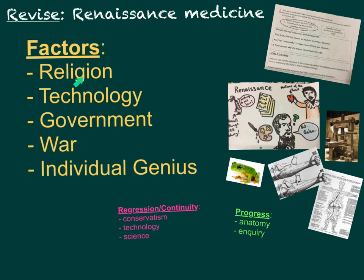Key factors include religion, technology, government, war, and individual genius. Let's have a quick think about each of these.